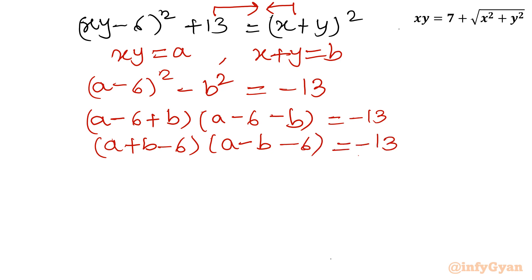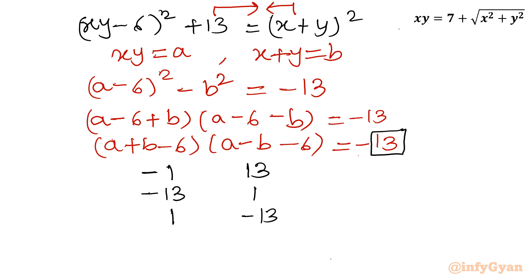Now prime factorization comes into the picture. Since 13 is a prime number, we consider four factor pair combinations for the two brackets equaling −13: (−1, 13), (−13, 1), (1, −13), and (13, −1). So there are four cases.